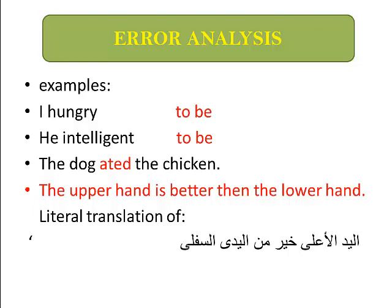The third sentence: 'The dog ate the chicken.' Here the speaker has not yet learned irregular verbs. The fourth sentence: 'The upper hand is better than the lower hand.' This sentence can be considered a wrong sentence in terms of meaning.